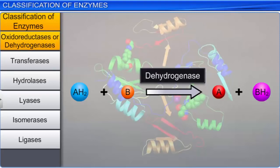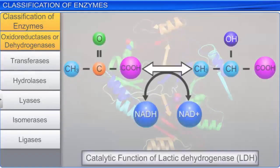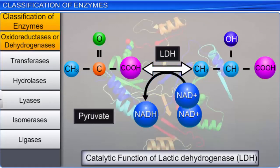Oxidoreductases or dehydrogenases are enzymes that catalyze the transfer of electrons and hydrogen ions from one molecule, called the reductant, to another molecule or the oxidant. Here, the reductant is the electron donor, while the oxidant is the electron acceptor. An example of an oxidoreductase enzyme is lactic dehydrogenase, which converts pyruvic acid into lactic acid and vice versa.